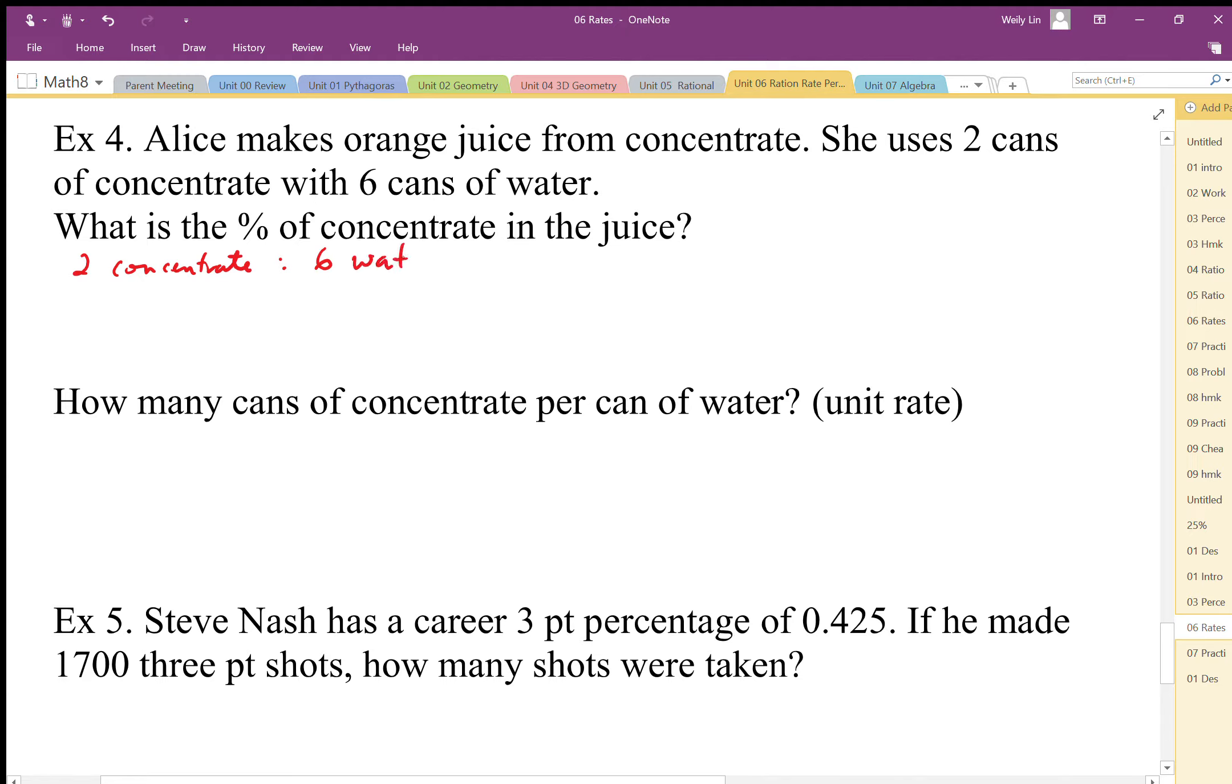Because this is a part-to-part comparison, I'm going to also write eight parts total. If I recognize part-to-part, it's sometimes useful to write the total. What percent of the concentrate is in the juice? To get the percentage concentrate, I need to compare the concentrate to the total.